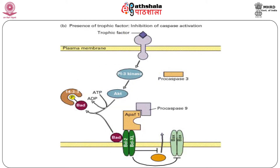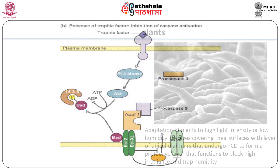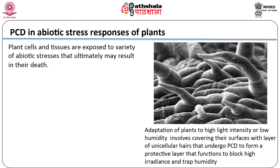In the presence of a trophic factor such as NGF in some cells, binding of trophic factors stimulates PI3-kinase activity, leading to activation of the downstream kinase AKT. This phosphorylates BAD. Phosphorylated BAD then forms a complex with the 14-3-3 protein. With BAD sequestered in the cytosol, the anti-apoptotic BCL2 and BCLXL proteins can inhibit the activity of BAX, thereby preventing the release of cytochrome c and activation of the caspase cascade.